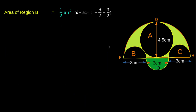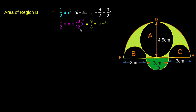The area of region B is a semicircle. The area of a semicircle is equal to (1/2) π R². Here, D is equal to 3 cm, so R is equal to 3/2 cm. Therefore, area of region B is equal to (1/2) × π × (3/2)² = 9/8 π cm².